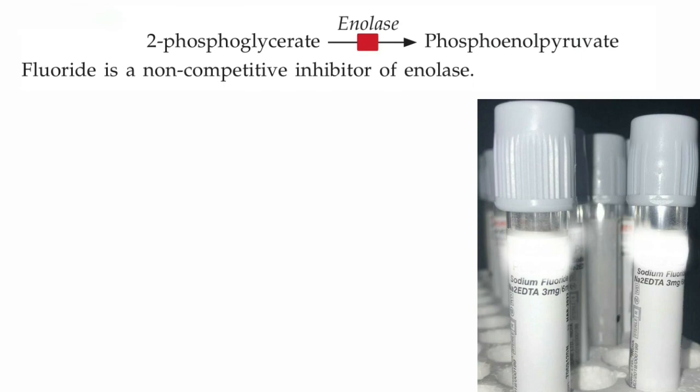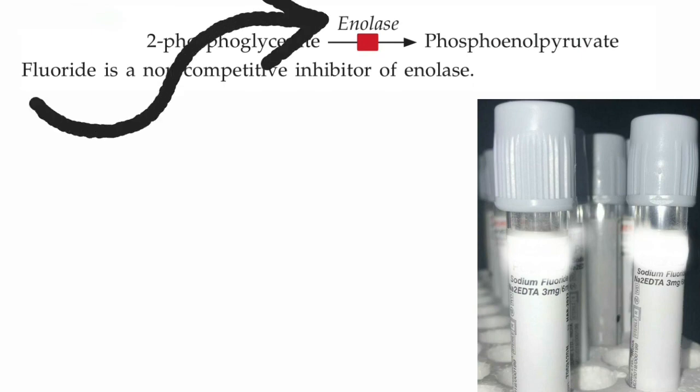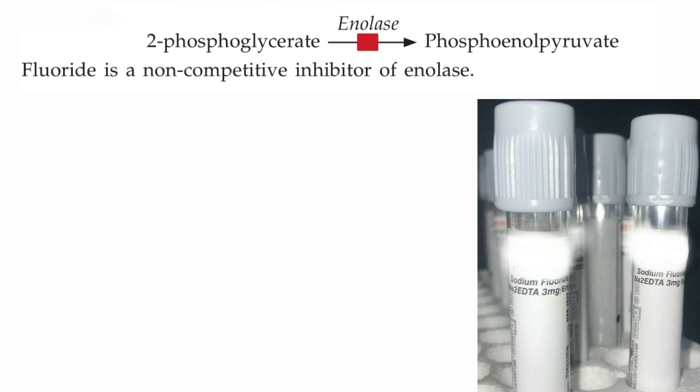Coming to examples of non-competitive inhibition: fluoride inhibits one of the enzymes of glycolysis, that is enolase, by non-competitive inhibition. Coming to its applications, it is used in diagnosis — when blood samples are collected in sodium fluoride vials, sodium fluoride can preserve blood glucose by inhibiting glycolysis. So sodium fluoride can preserve blood glucose for at least three days.